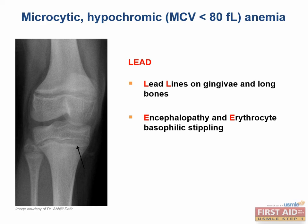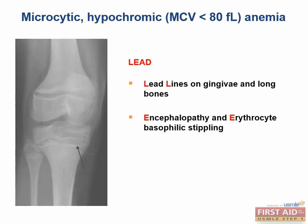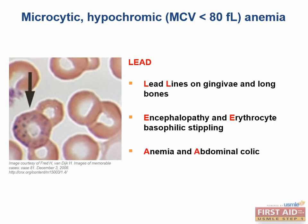Continuing the LEAD mnemonic: E stands for encephalopathy and erythrocyte basophilic stippling; A stands for anemia and abdominal colic; D stands for drop — as in wrist and foot drop. Lead poisoning is treated with chelating agents dimercaprol and EDTA. If the patient is a child, treat with succimer. These are all chelating agents used for elemental toxicities. Succimer has lower toxicity and does not increase excretion of other essential minerals. Remember: it sucks to be a kid who eats lead.